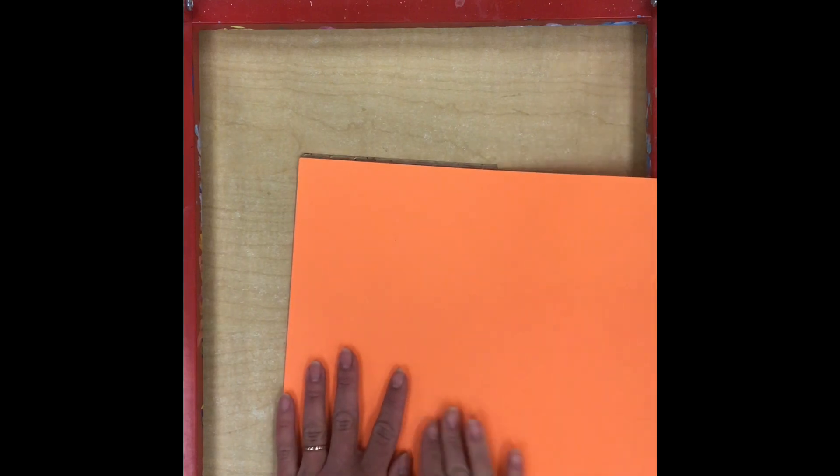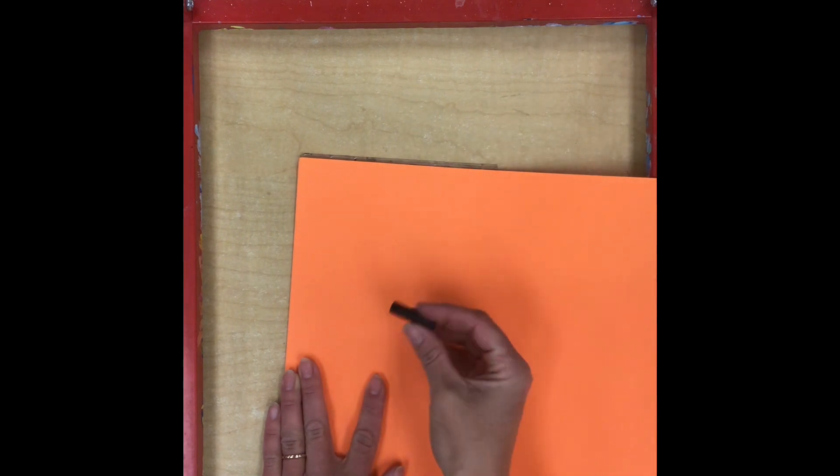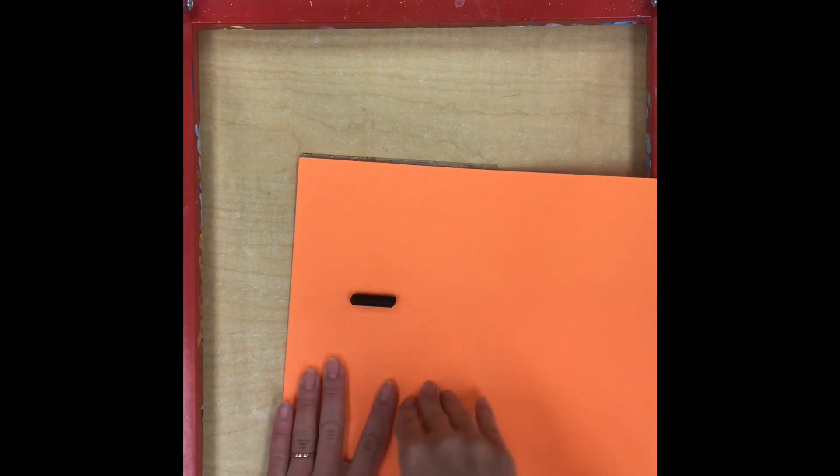Now I'm going to hold down firmly with one hand, and with my other hand I'm going to take a peeled crayon and lay it on the side. I do not want to color with the point like I normally would. It's really important to lay it on the edge.